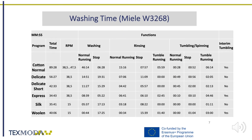The table on this slide shows total time duration and RPMs for cotton, normal, delicate, delicate short, express, silk and woolen wash cycles for washing and rinsing phases. For the tumbling and spinning, tumble running RPMs are defined by the user — for instance 600, 800, 1200 or even 1600 RPM. Normal running speeds are in the table. For each phase, running and stop times are indicated. Finally, in some cases interim tumbling is available and in other cases it is not. All those times have been measured with a stopwatch from videos made on a Miele W3268 laundering machine.